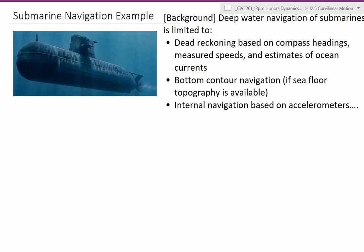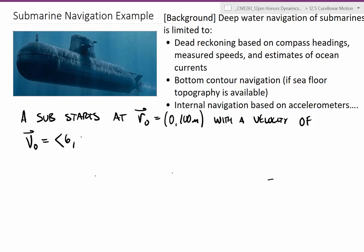So our problem statement for this problem is that a submarine starts at a position, its initial position here R-naught as a vector is equal to 0, 100 meters with a velocity of V-naught vector 6, 0, so that will be in meters per second, moving with an x-component of the velocity 6 meters per second.